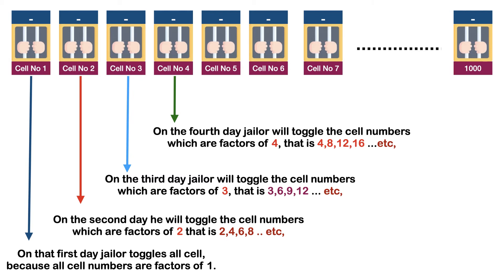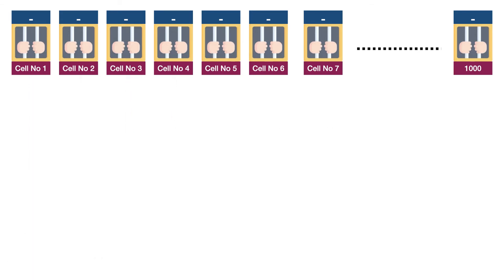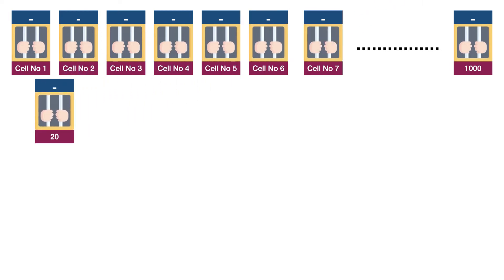A cell gets toggled as many times as the number of divisors it has. Now consider some random number — for example, cell number 20. Let's see on which days this cell number is toggled. This is simple: just find the factors of the cell number, and those are the days that cell will be toggled.